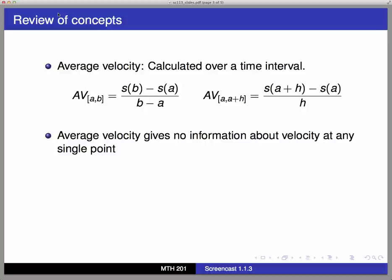For example, when Alice was taking five minutes to travel between two classroom buildings that were 100 meters apart, her average velocity on that time interval was 100 divided by 5, or 20 meters per minute. But that doesn't tell us how fast she was traveling at any single moment. She could have been stopped for a while and then ran, or she could have walked 20 meters per minute constantly throughout the whole time. The average velocity figure of 20 meters per minute does not tell us anything about that.